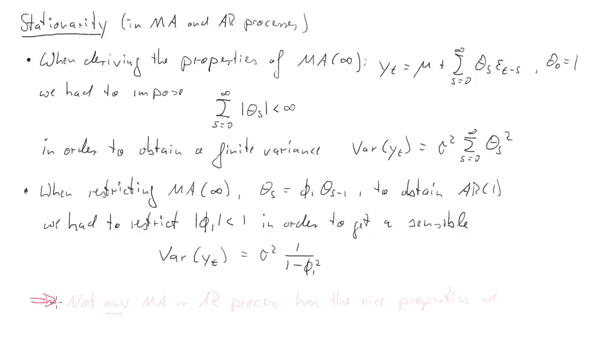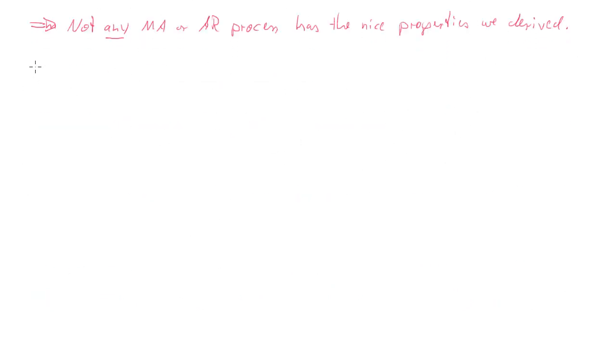So the conclusion so far is that not any MA or AR process has the nice properties we derived. So this now leads us to think that really we need some sort of restrictions. And the restrictions we're going to use is that of imposing that our process is a stationary process. Now there are all sorts of definitions of stationarity. The one we are using here goes under different names, sometimes called covariance stationarity, or weak stationarity, or second order stationarity.